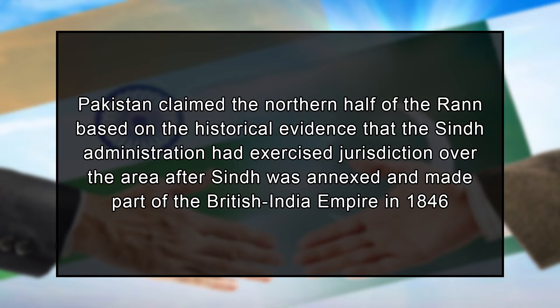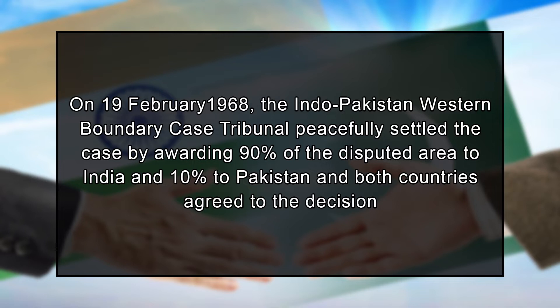Pakistan claimed the northern half of the Rann based on historical evidence that the Sindh administration had exercised jurisdiction over the area after Sindh was annexed into the British Indian Empire in 1846. Pakistan contended there was a disputed boundary needing demarcation, while India argued the boundary was well-defined. On 19th February 1968, the Indo-Pakistan Western Boundary Case Tribunal settled the case by awarding 90% of the disputed area to India and 10% to Pakistan, and both countries accepted the decision.